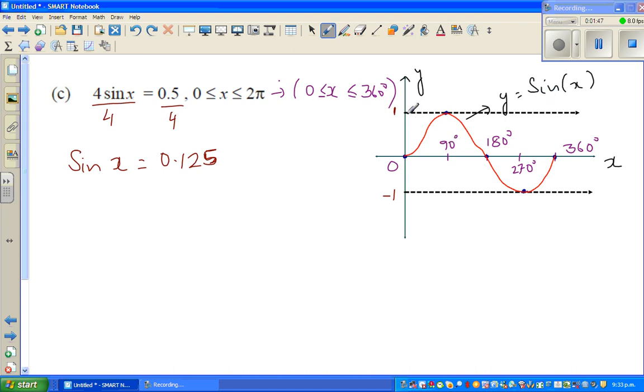The maximum is 1, minimum is minus 1, and this is your baseline. So the question is: when is your sin x becoming 0.125?